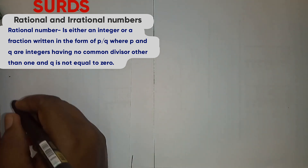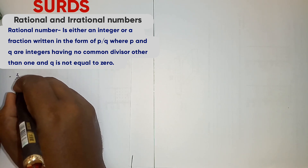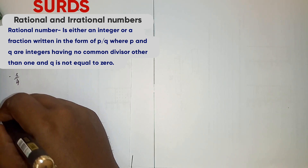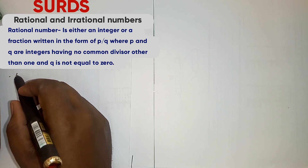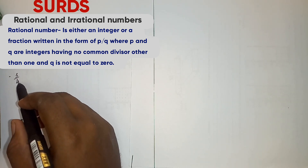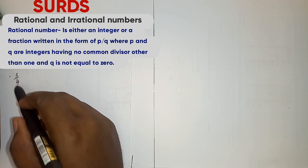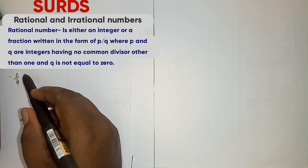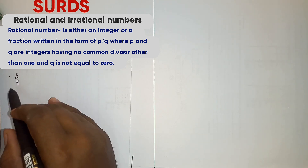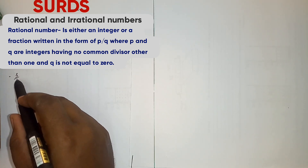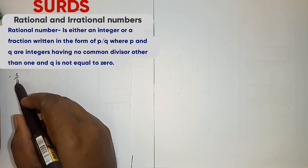For example, 3 over 4 is an example of a rational number. Why? Because it is written in the form P over Q, and the two numbers P and Q don't have a common divisor other than 1, because each is only divisible by 1. And Q is greater than 0 — in other words, Q is 4.